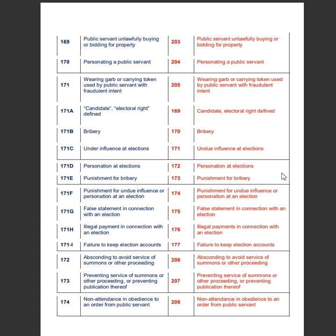Section 171H of the IPC deals with illegal payment in connection with an election, whereas Section 176 of the BNS deals with illegal payments in connection with an election. Section 171I of the IPC deals with failure to keep election accounts, whereas Section 177 of the BNS deals with failure to keep election accounts.